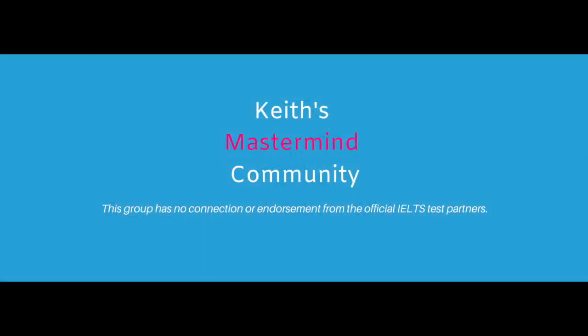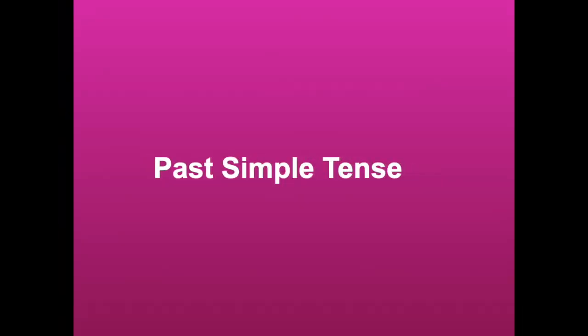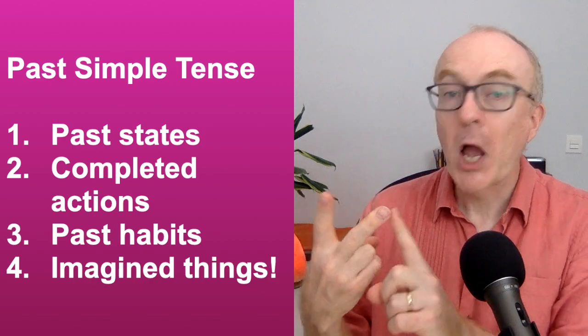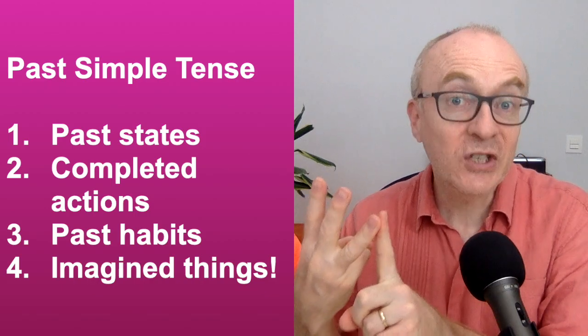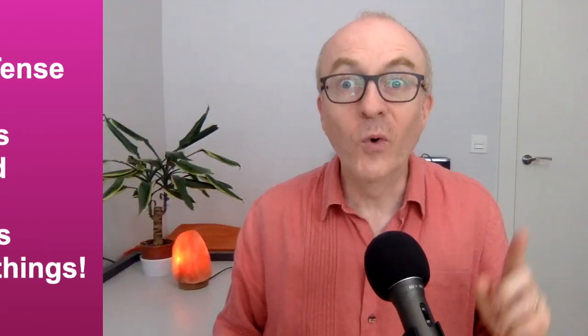If you haven't joined the Facebook group yet — Keith's IELTS Mastermind Community for IELTS speaking — follow the link below. Come and join us. Lots of activity, interesting sharing, loads of ideas and motivation to boot. So let's go back to the past. When it comes to the past simple, there are four things we can look at: states in the past, completed actions, past habits, and imaginary things in the present or the future.